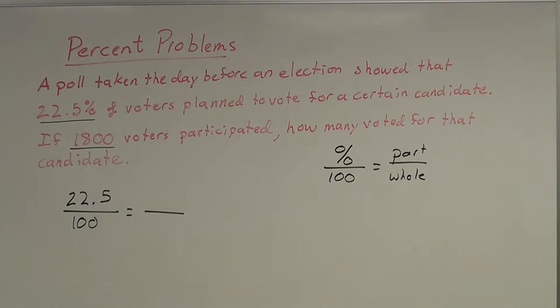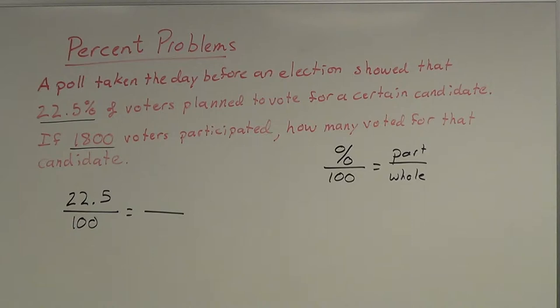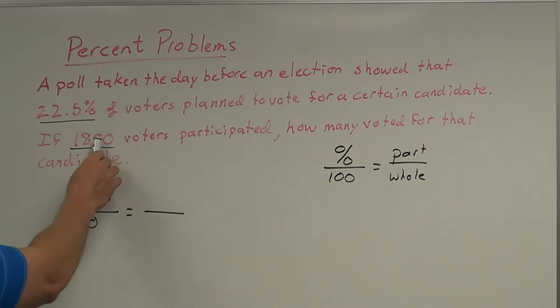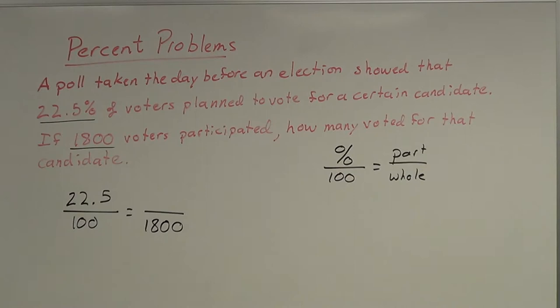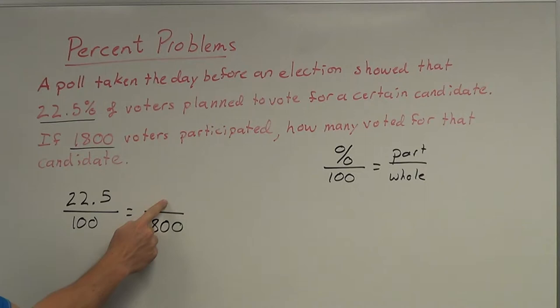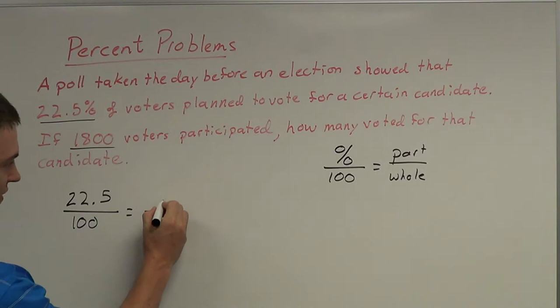Now I've got to figure out what the part is and what the whole is. If 1,800 voters participated, is that the part or the whole? I know that 1,800 is my largest number — that's the total number of voters who came in and filled out ballots. So that's the big number: 1,800 is going to be the whole. The part is going to be how many voted for that candidate. We'll call that variable C — C stands for how many people voted for that candidate. That's the unknown part.